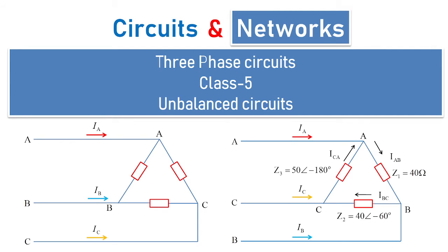Welcome to another session of circuits and networks. In today's class 5 under three-phase circuits, we are going to see problems involving unbalanced loads. This particular class we are treating as unbalanced circuits. Here you can see a delta type of load is connected whose load values are different from one another. When loads are connected in this fashion, they are treated as unbalanced circuits. So how do we solve this kind of unbalanced circuit problems?